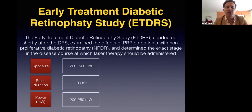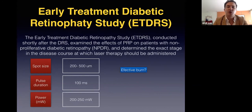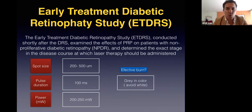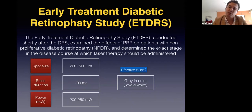What is an effective burn? Some people think a white burn is effective — it's not; it means too much thermal energy. The effective burn is gray in color. At the beginning it's difficult to tell the difference between gray and white, so take time to observe. If you're getting a very white, milky burn, reduce your power by at least 50 milliwatts.